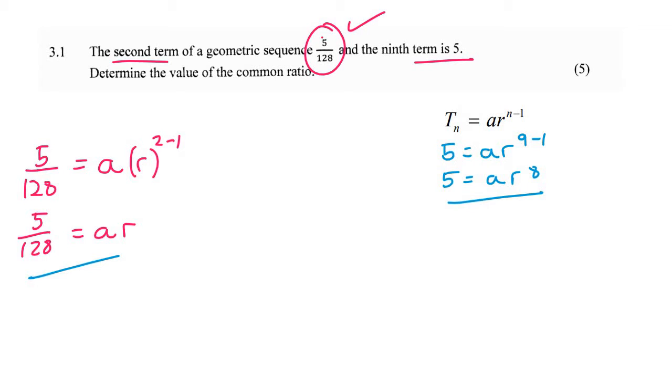A nice way to do this is to take this equation and get A by itself. So if I get A by itself, it's going to say A equals 5 divided by 128R. Make sure you understand what I've done there. Then I'm going to take this A and plug it in over here.